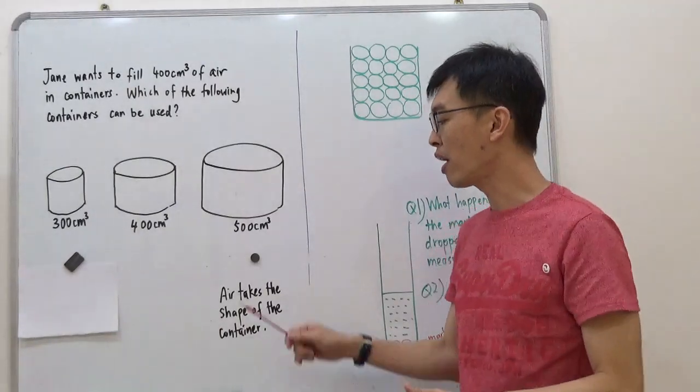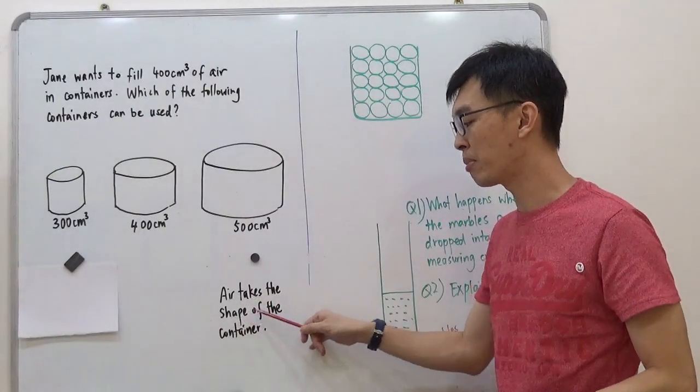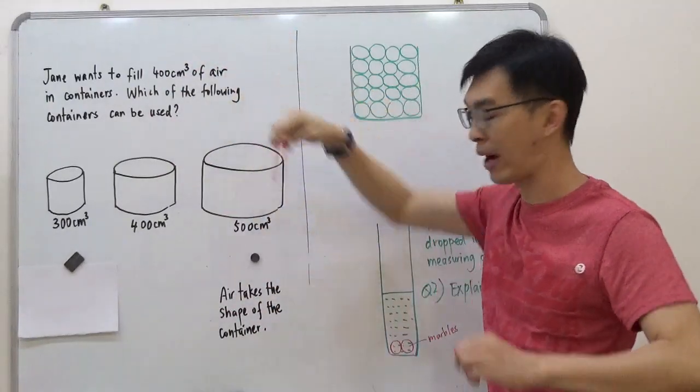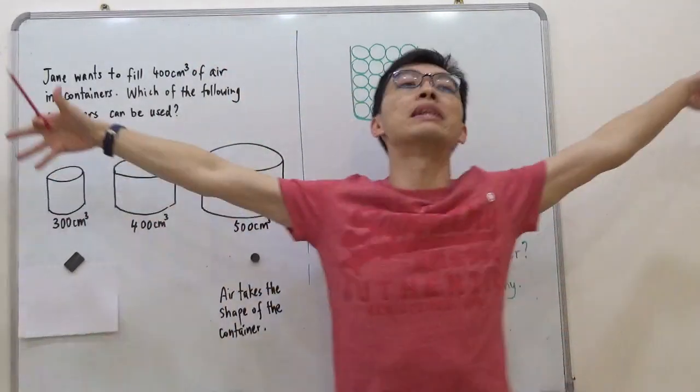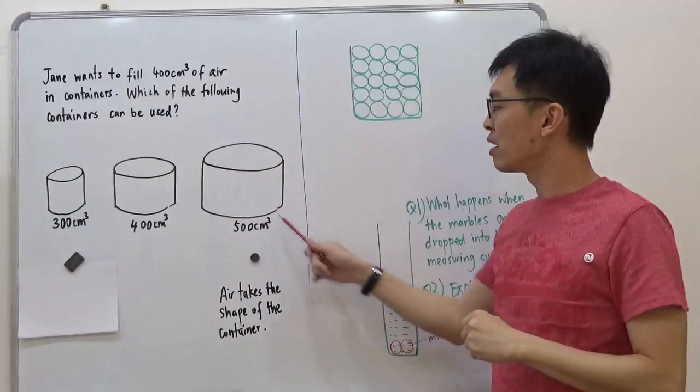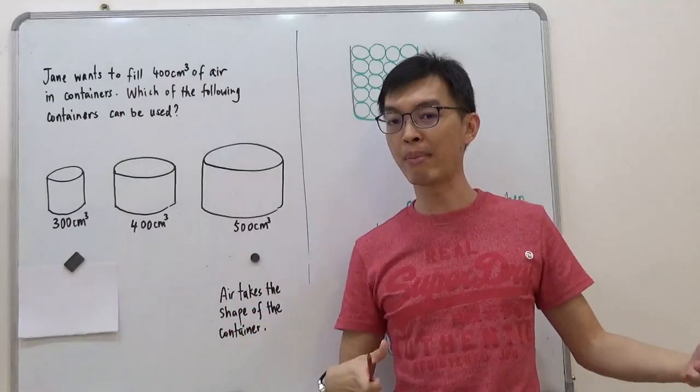We learned this before. Air takes the shape of the container. So if I take 400 cm³ of air and put it in, they will all spread themselves out and occupy the entire space. They will occupy the bigger space.